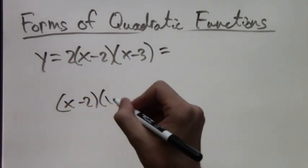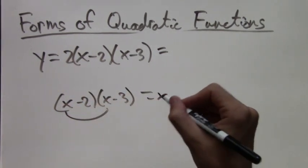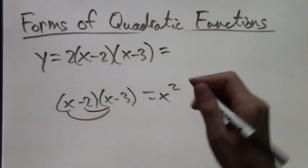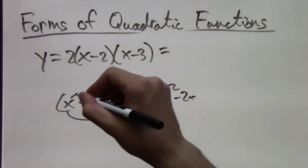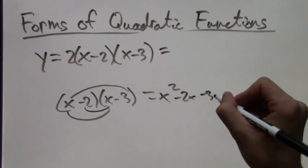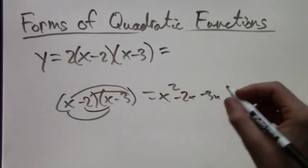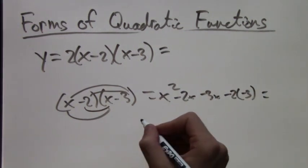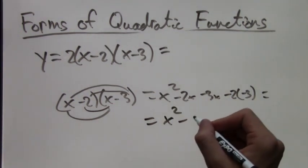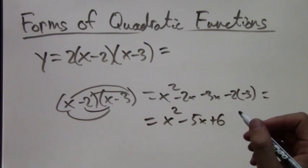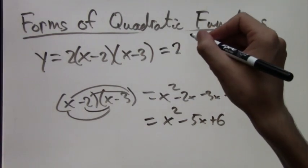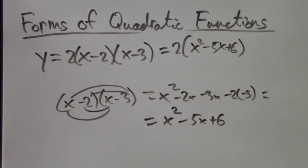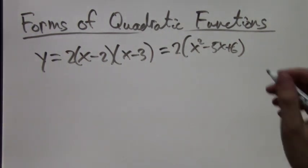Because we can FOIL out the x minus 2 times x minus 3. So we get an x squared term there minus 2x here minus 3x and a plus 6. Negative 2 times negative 3 is plus 6. So when we simplify we get x squared minus 5x plus 6. This is in standard form. So we started with the root form but it's really easy to end up with the standard form again. Notice that they are different indeed.